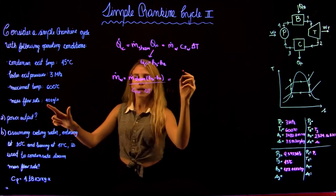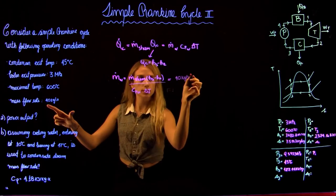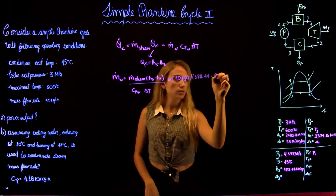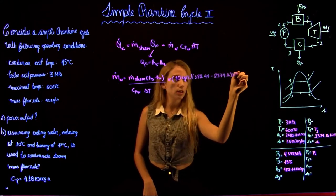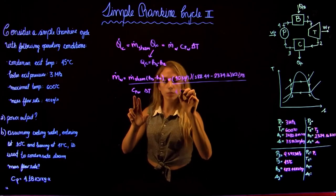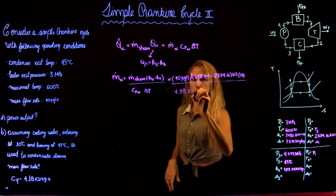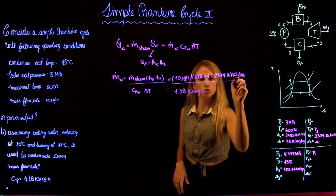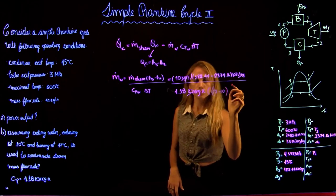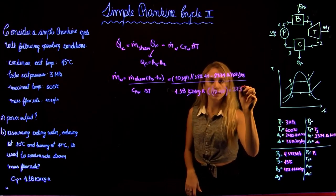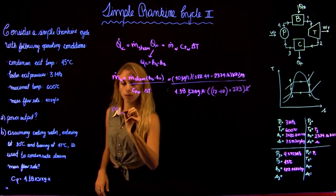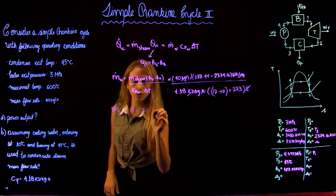Plugging in the numbers: the mass flow rate of steam is 40 kg/s, H3 = 188.44 kJ/kg, H2 = 2374.16 kJ/kg. The Cp of water is 4.18 kJ/(kg·K). The delta T is 17 − 10 = 7°C, which we convert to kelvin by noting the difference is still 7 K. This gives us a mass flow rate of the cooling water of 3751.67 kg/s — the speaker states 71.71 kg/s — of 3751.67 kilograms per second.